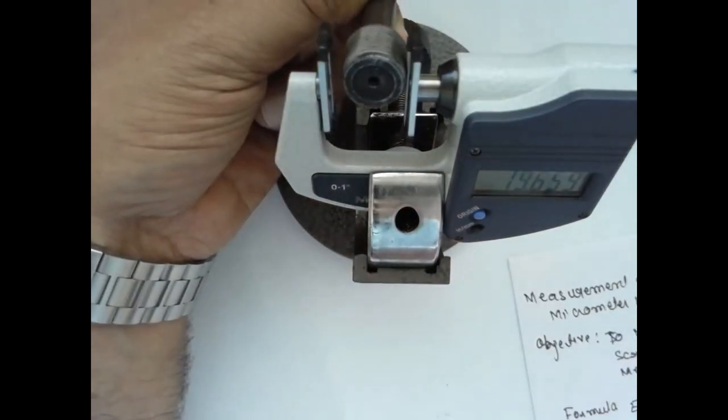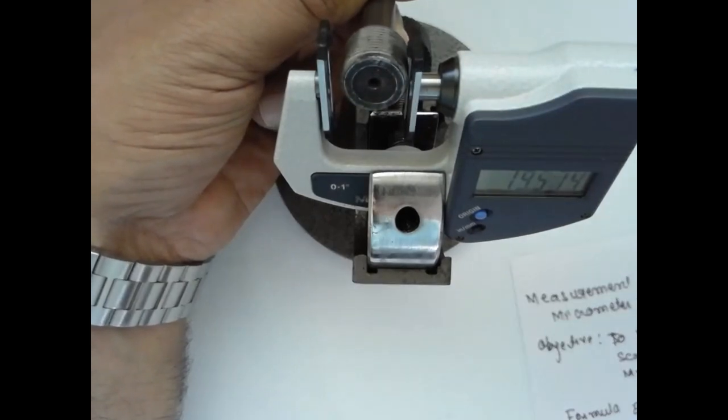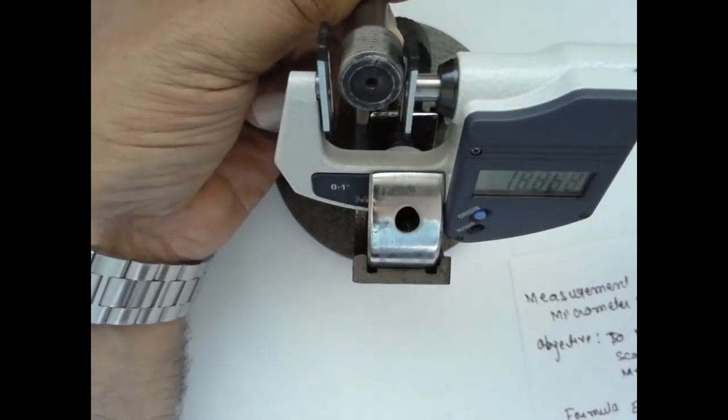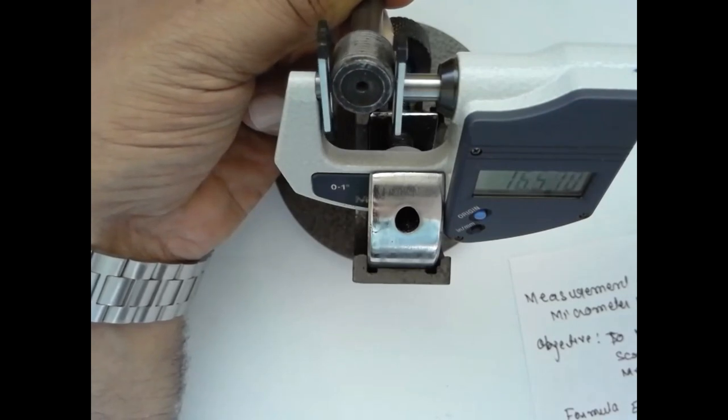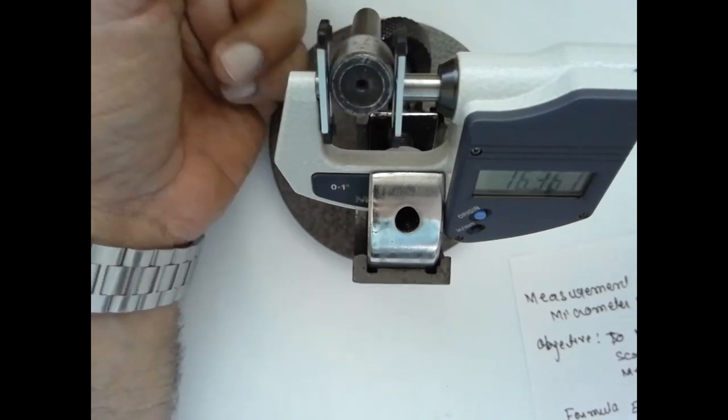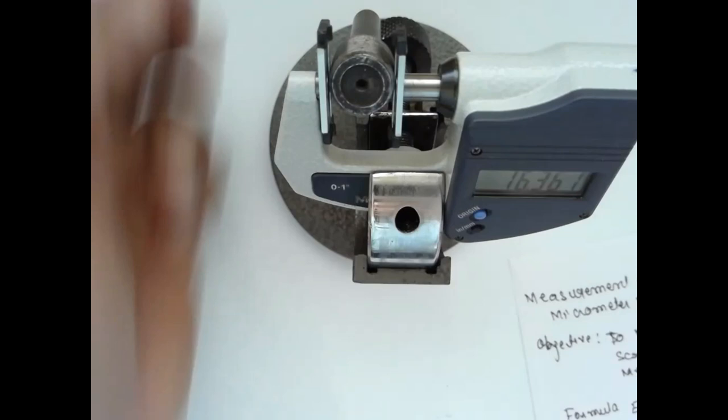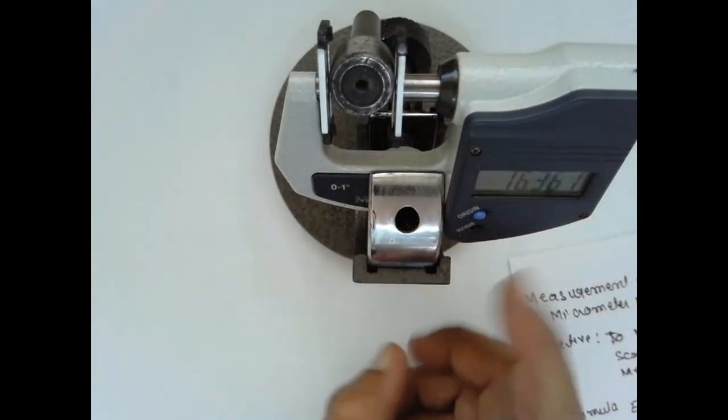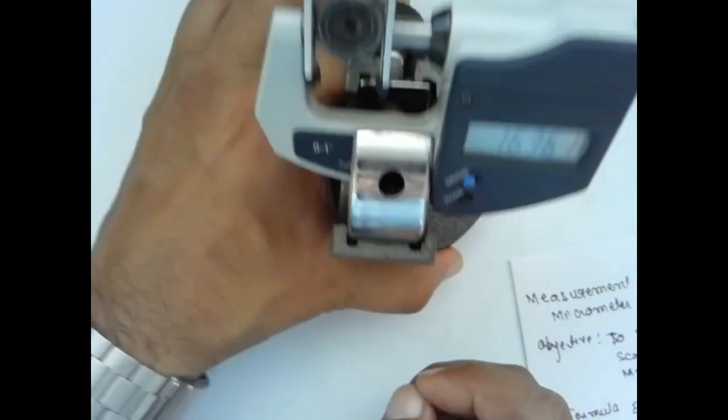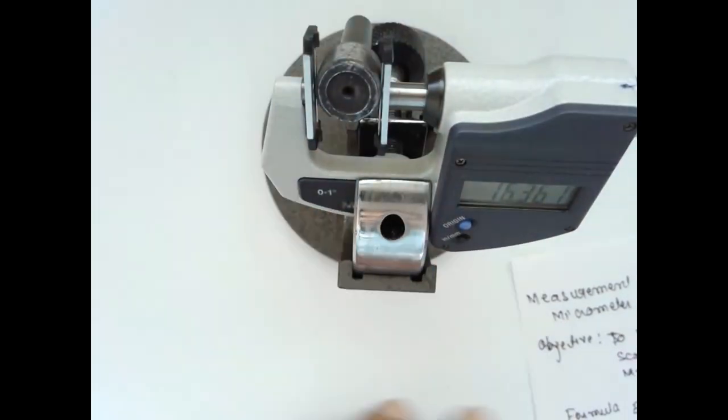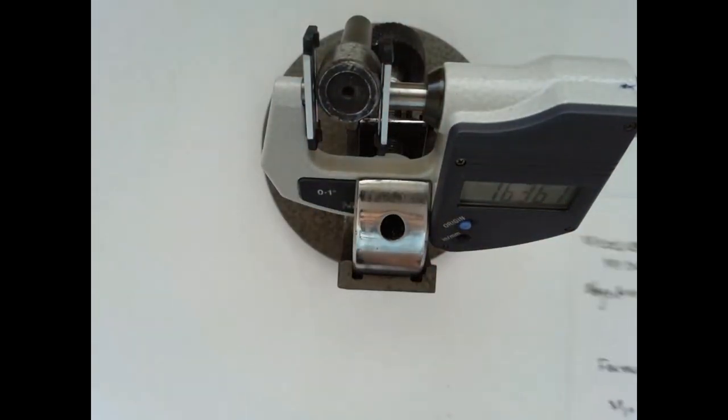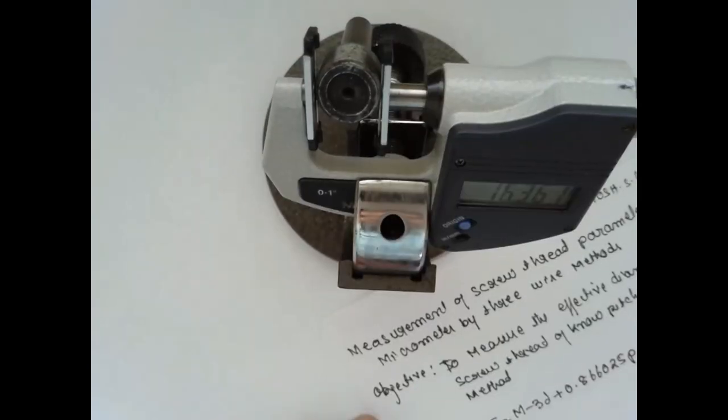Now we are taking the first reading. This is the first trial. The reading will be 16.361 mm. Note down the reading. M1 is 16.361.